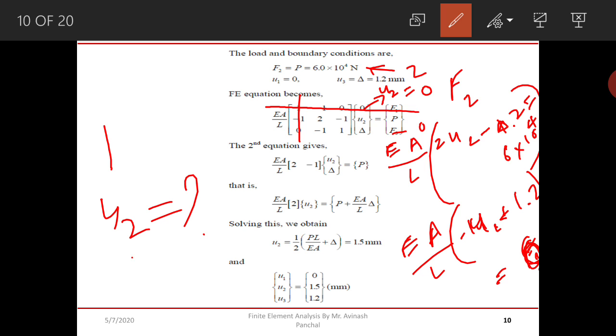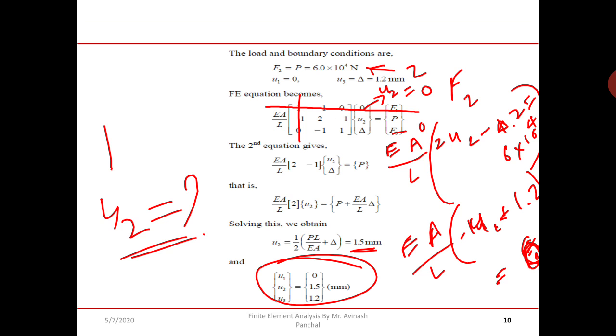We will get the value of U2 as 1.5 mm. So here we have the values of U1, U2, and U3. We will go to the next slide.